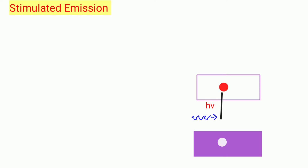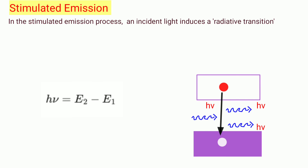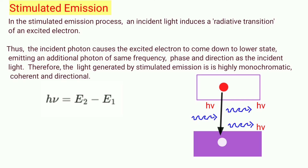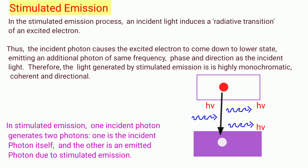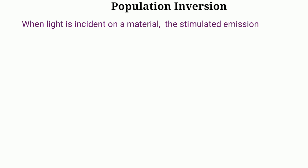In stimulated emission, an incoming photon with energy equal to the energy difference between allowed energy levels interacts with an electron in the excited state. A photon is emitted whose energy equals E2 − E1 = hν. The emitted photon has the same frequency, direction, phase, and polarization as the incoming photon. Thus, one incident photon generates two photons — the original and the emitted one — both with the same phase, traveling in the same direction.